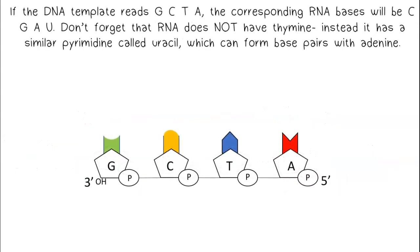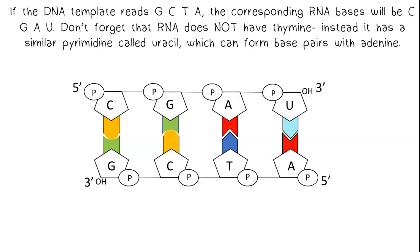If the DNA template reads G, C, T, A, the corresponding RNA bases will be C, G, A, U. Don't forget that RNA does not have thymine. Instead, it has a similar pyrimidine called uracil, which can form base pairs with adenine.